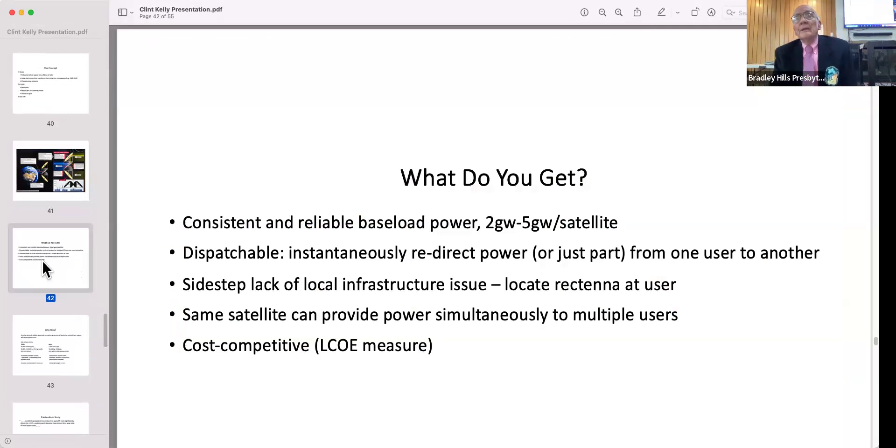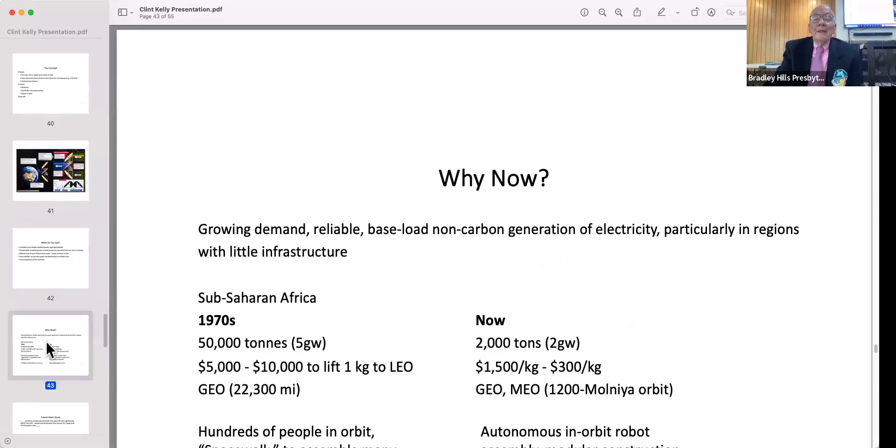What do you get? You get consistent, reliable base load power. The sun always shines up there. You get somewhere between two and five gigawatts per satellite—more if you want it. It's dispatchable, so you can instantaneously redirect power from one user to another depending upon load requirements. You can split the output so you can simultaneously serve multiple users. That's pretty cool. We think it's pretty cost competitive, but nobody's built one so we don't know.